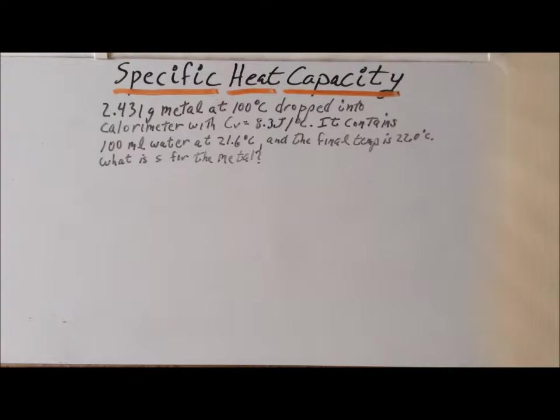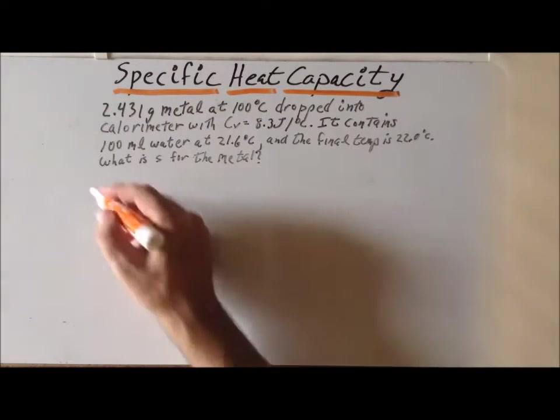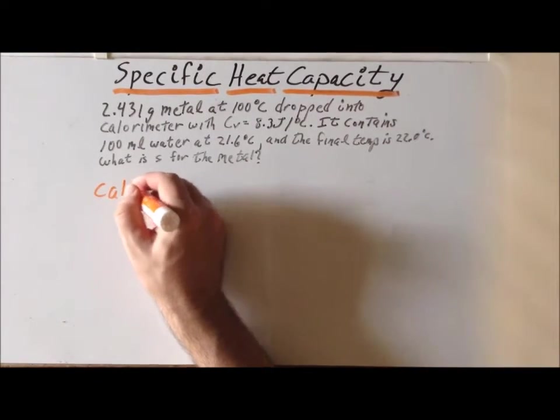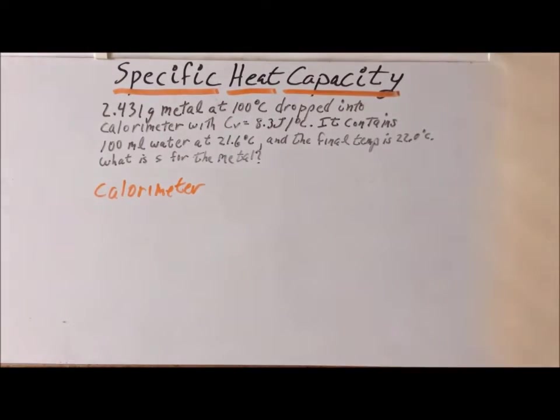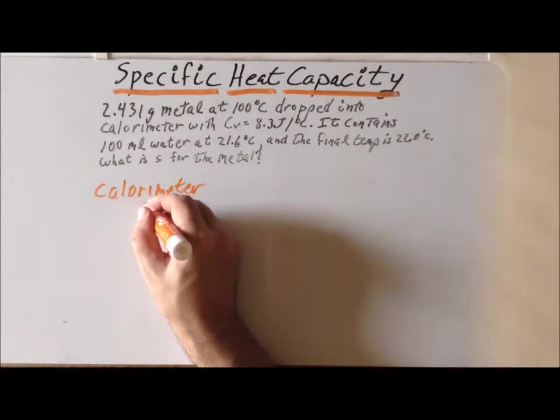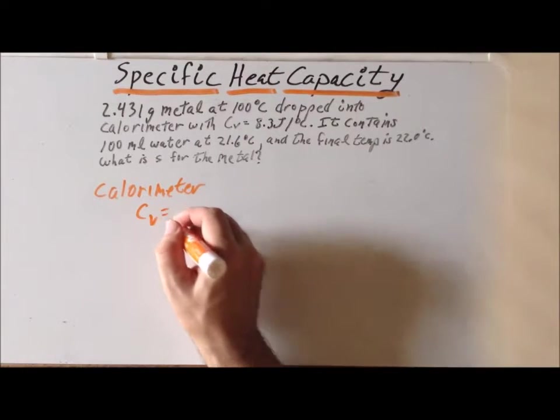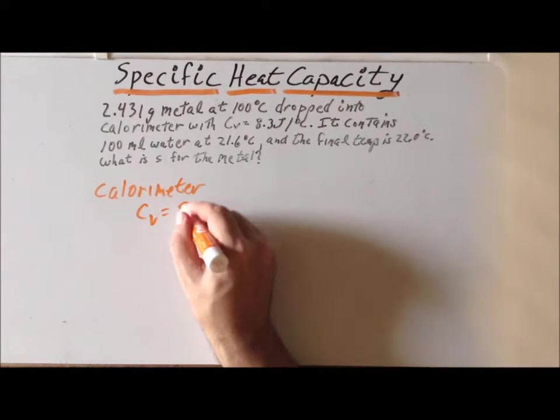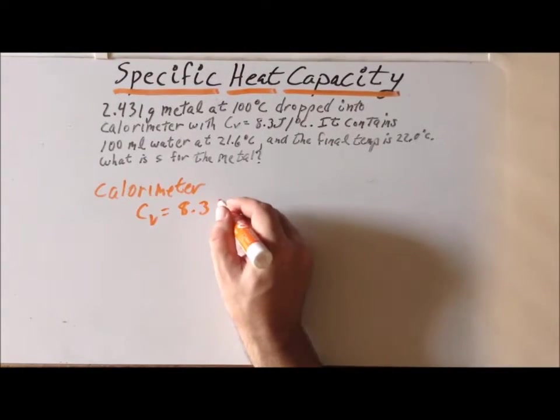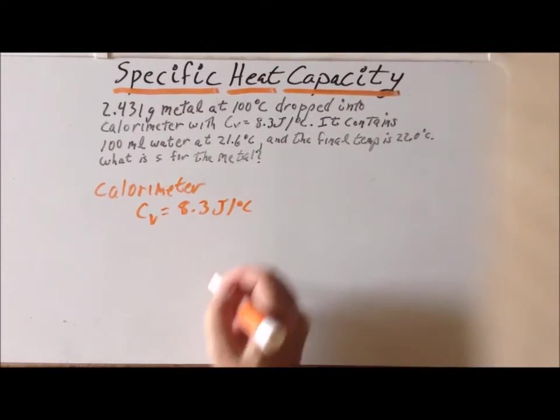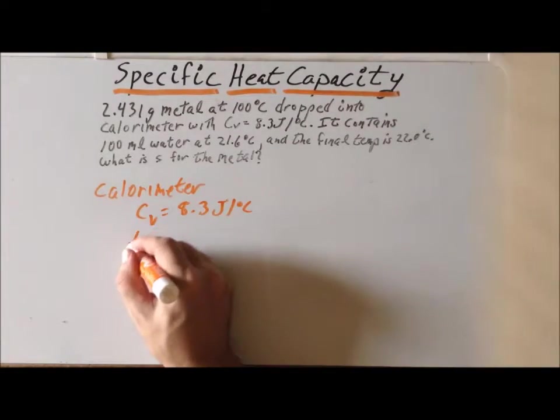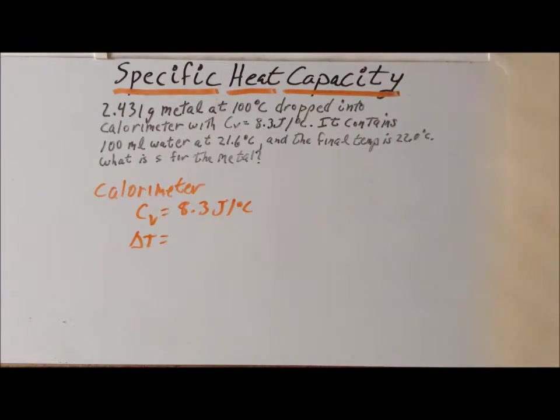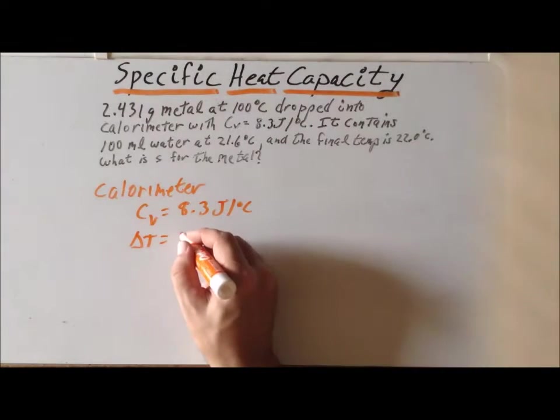Next, we want to calculate Q relative to the calorimeter. So, the calorimeter, we know that the heat capacity, C sub V, is equal to 8.3 joules per degree centigrade. Also implied in the problem is that the change in temperature is exactly the same as the change in temperature for water.